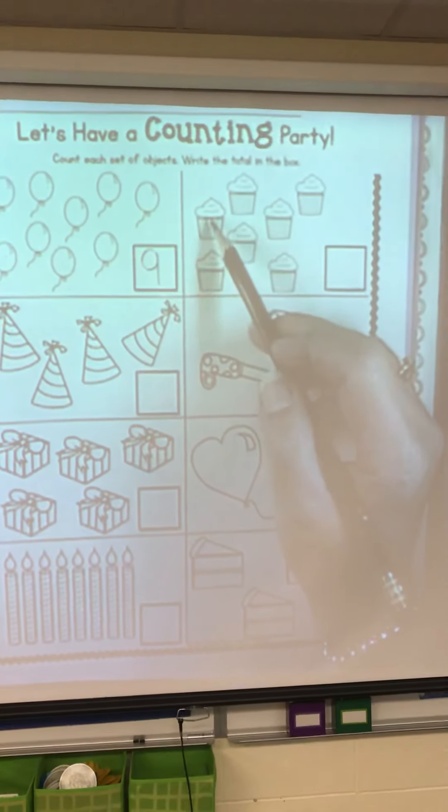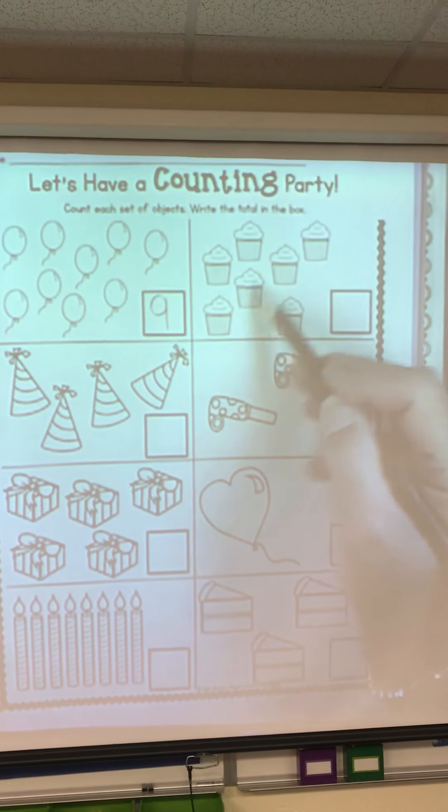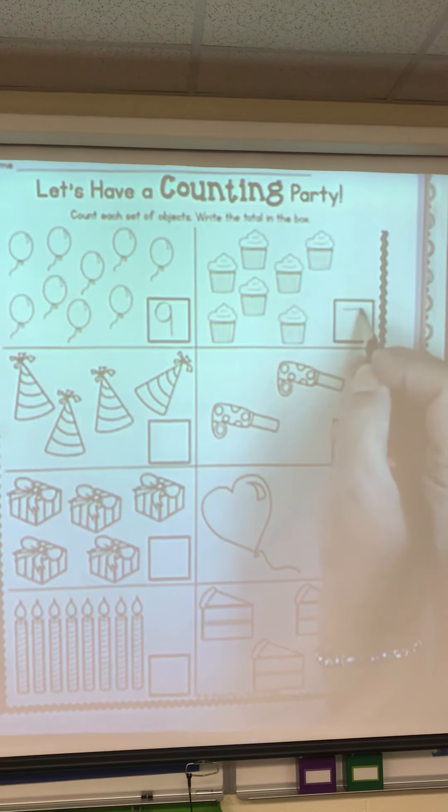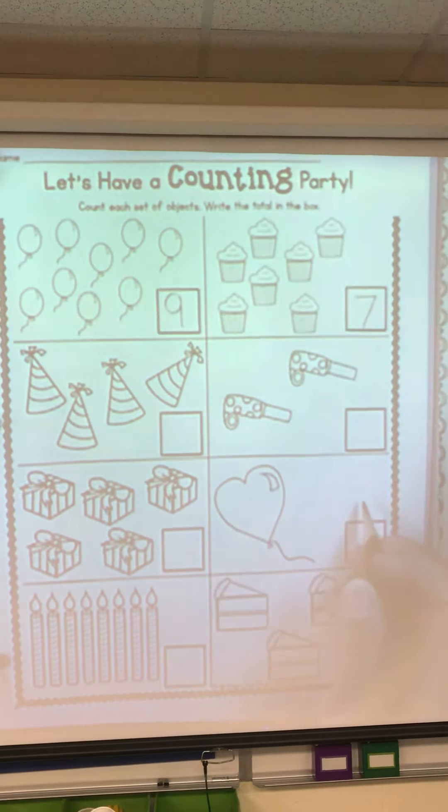Count. 1, 2, 3, 4, 5, 6, 7. Straight across, slant down. That's 7.